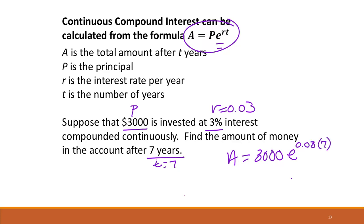So if we do that, we get that A will be $3,701.03.